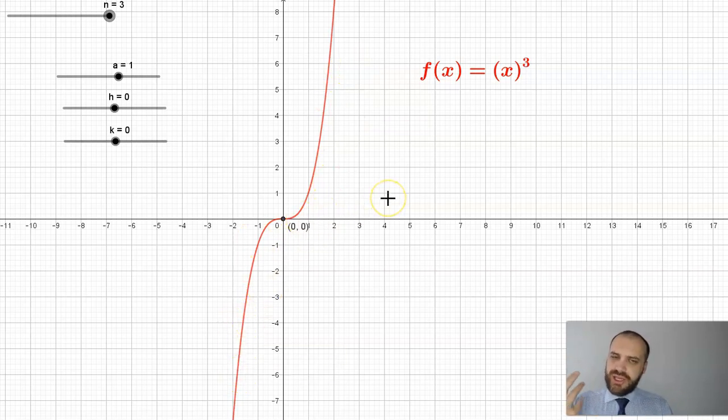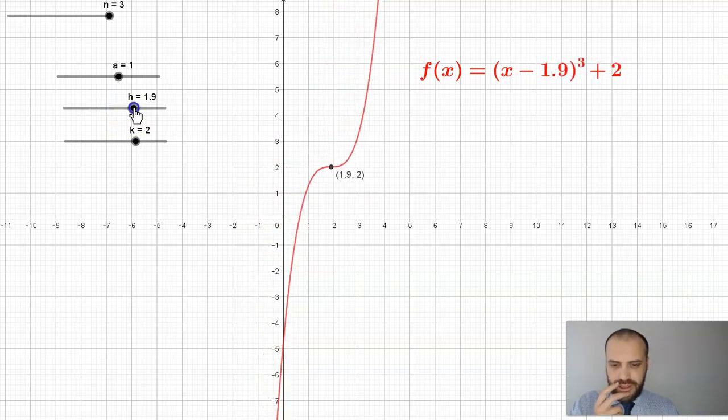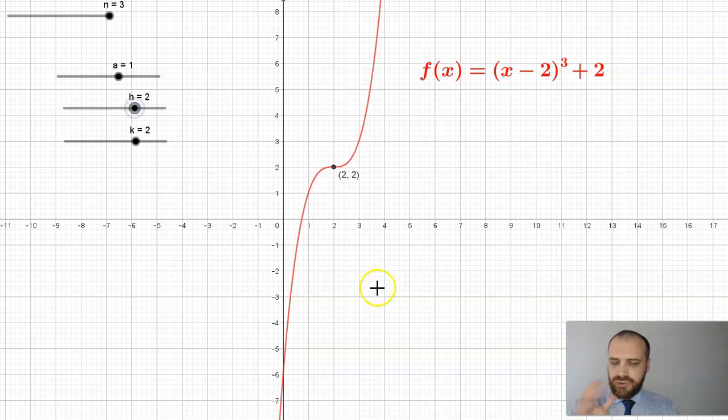You can see it looks like x squared, except the negative half of it has flipped around. Okay, so that's f of x equals x cubed. Now we can start transforming it. If I add something to the function on the end, it's going to move up. And if I subtract something from it, it's going to move right. You can see I've transformed this thing, and I've got this special point here called a stationary point of inflection.